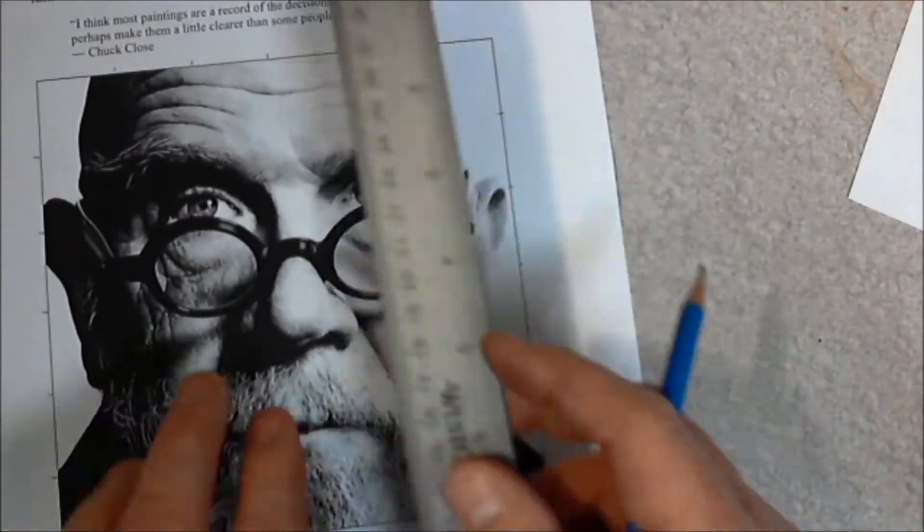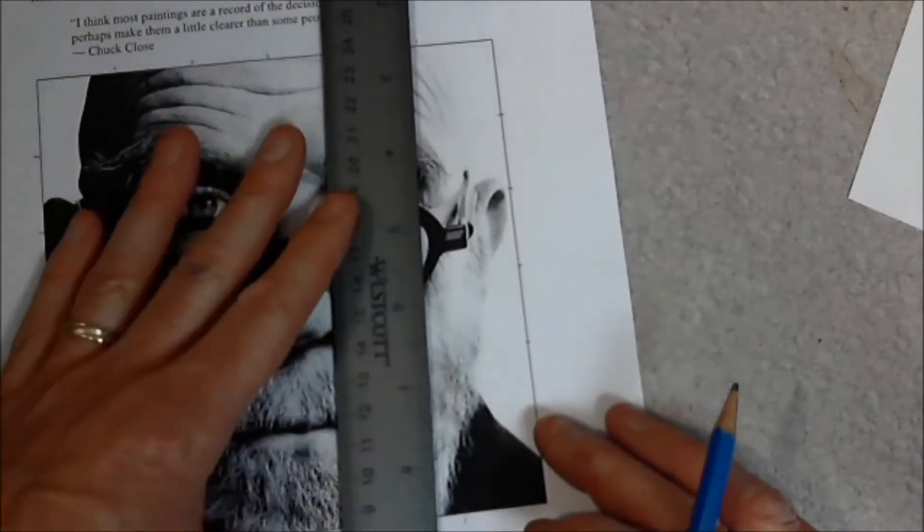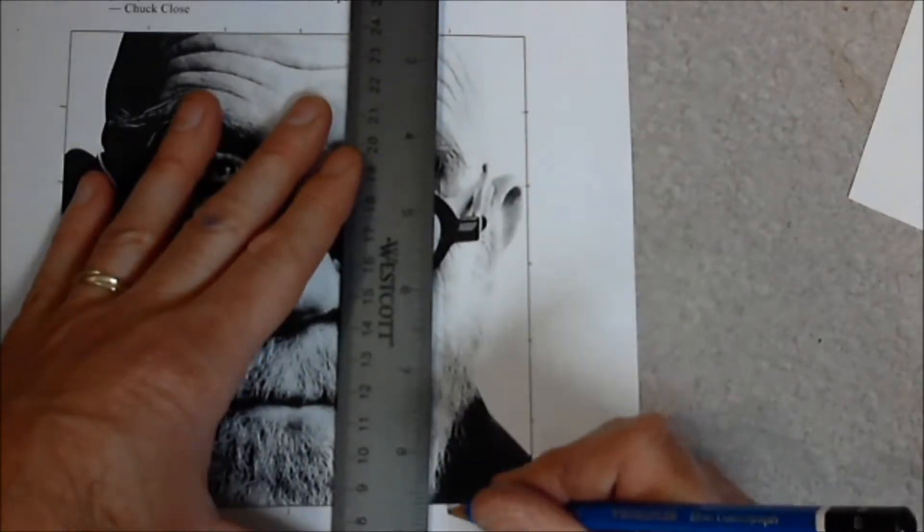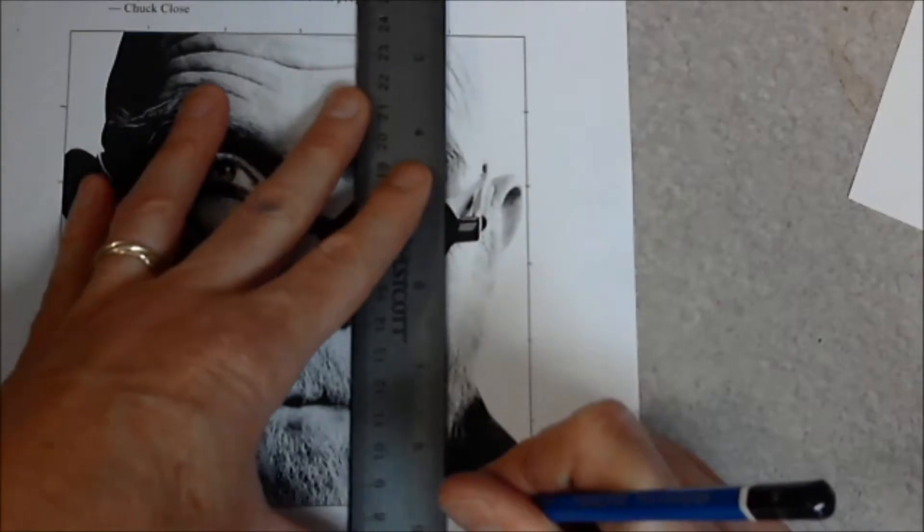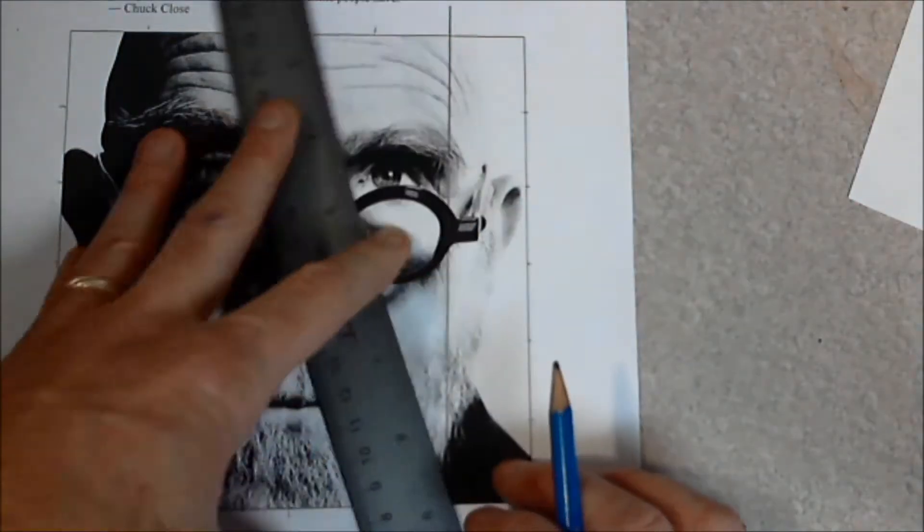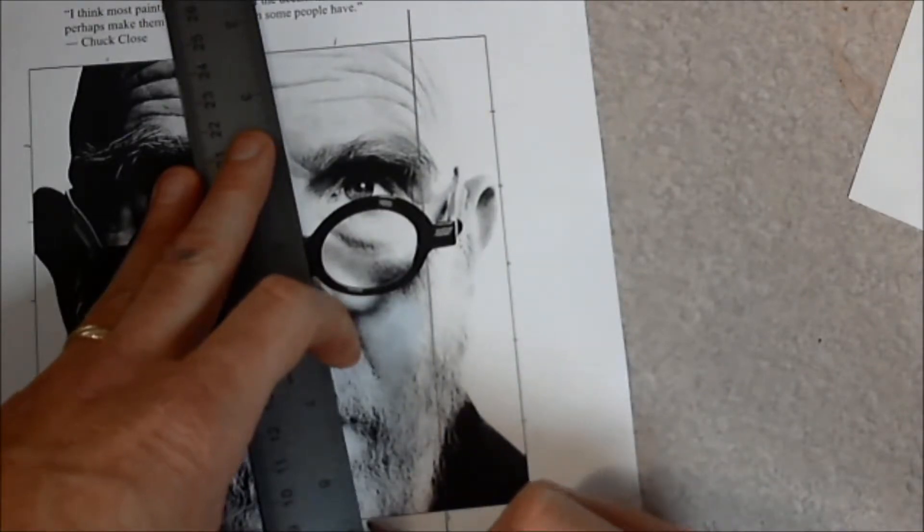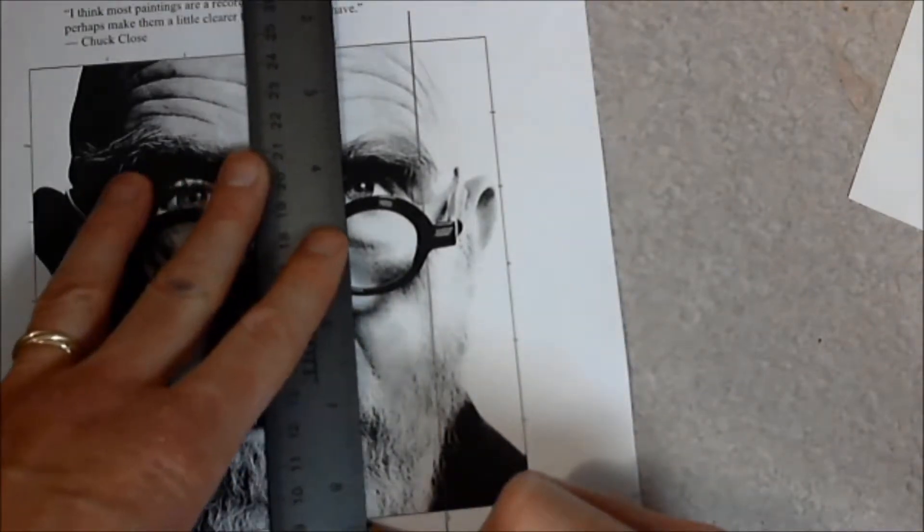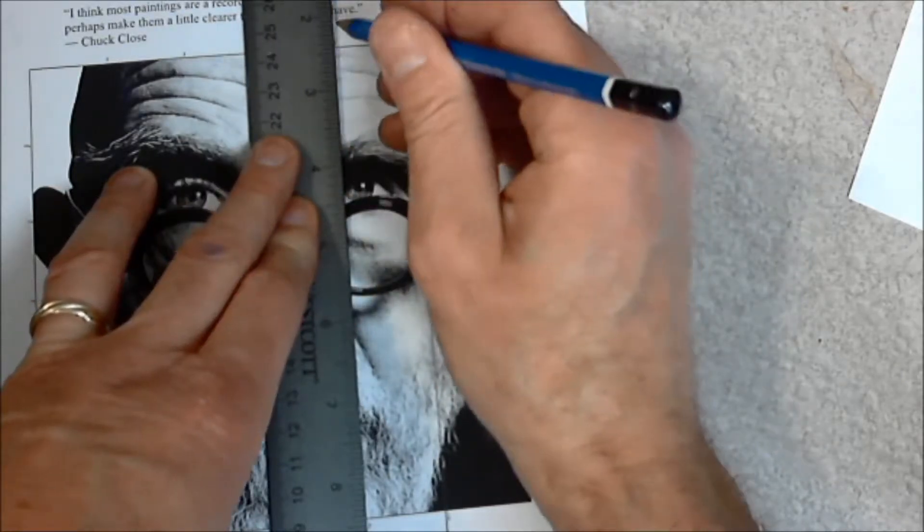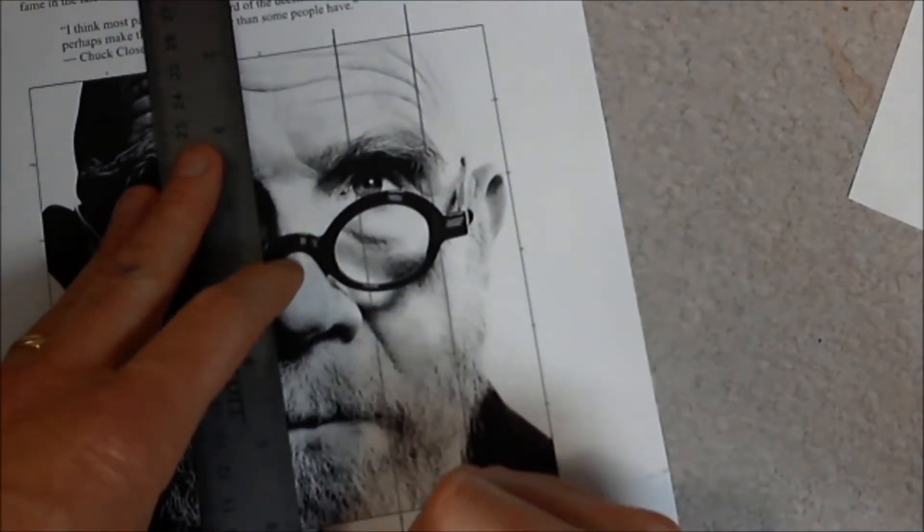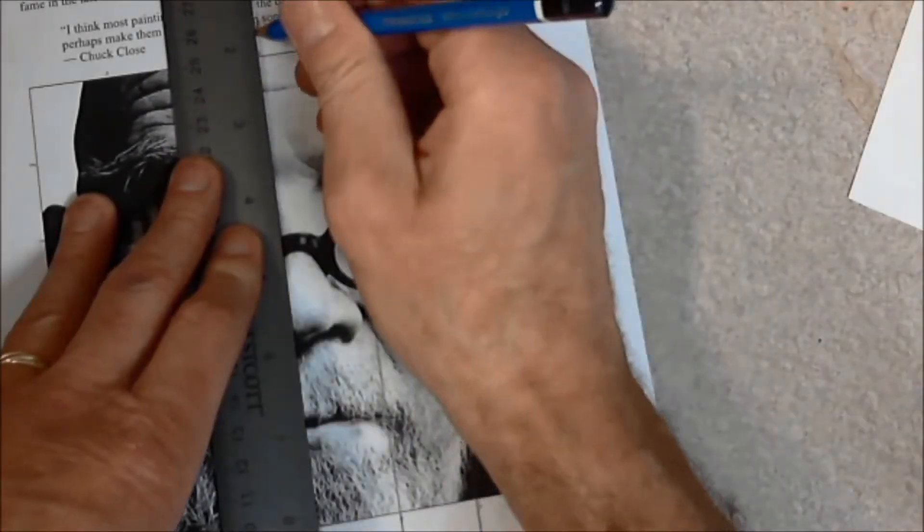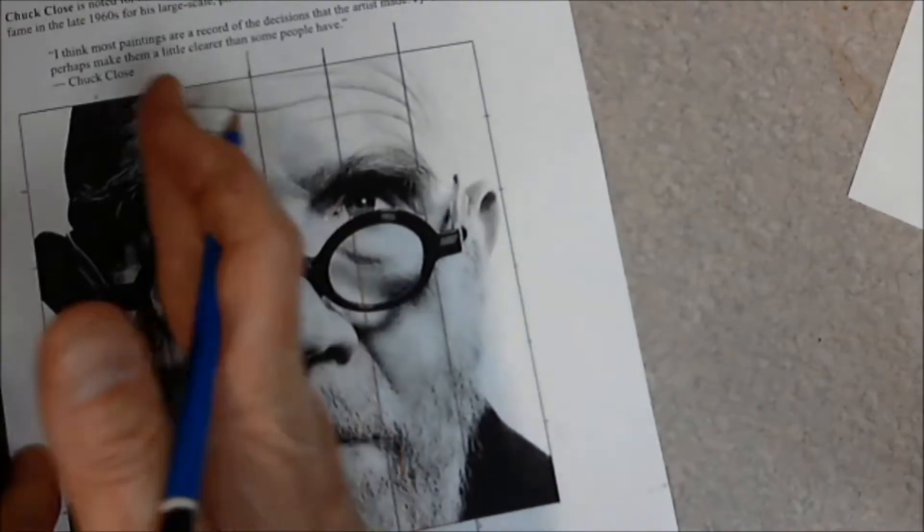Then what I'm going to do is I'm going to very carefully line up my marks, put my pencil at one point, slide my ruler to mark it, and right on the photograph I'm going to make my line. There's one, two, three, and then I'll continue, four and five.